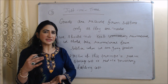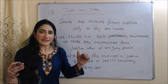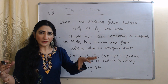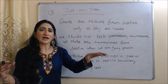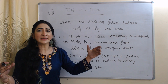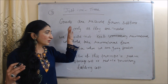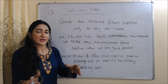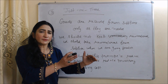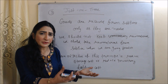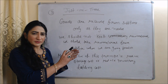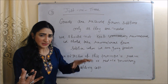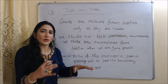The next technique is just-in-time. According to this technique, goods are received from the supplier only as they are needed. We should not keep unnecessary raw material; we should take raw material from the supplier only when we are going to produce. The main objective of this technique is to reduce storage cost, or inventory holding cost.